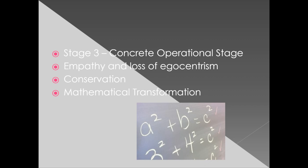By stage three, the concrete operational stage — roughly age six to ten — you see the loss of egocentrism and the development of empathy. Kids begin to understand how other people feel and develop the conservation skills from the last stage; now the girl would say both glasses have the same amount. The last feature is mathematical transformation: if you have three plus two equals five, and then see five minus two, you automatically know it's three. A child in stage two would have to do the math, but in stage three they just know to rearrange the numbers.